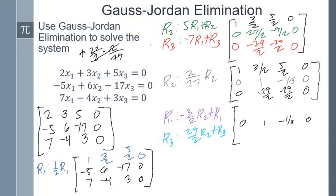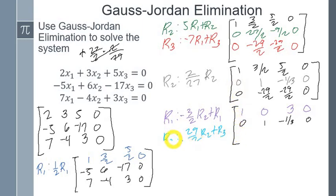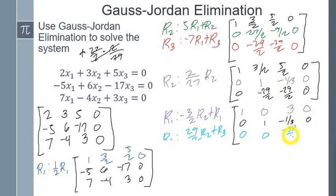For row 1: negative 3/2 times 0 plus 1 is 1; negative 3/2 times 1 plus 3/2 is 0; negative 3/2 times negative 1/3 plus 5/2 is 1/2 plus 5/2 which is 3; and 0. For row 3: 29/2 times 1 is 29/2 plus negative 29/2 is 0; 29/2 times negative 1/3 plus negative 29/2 is negative 58/3; and 0.